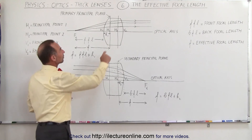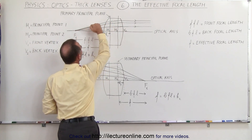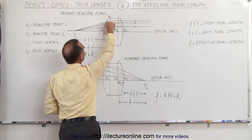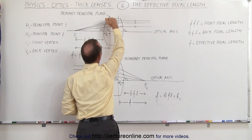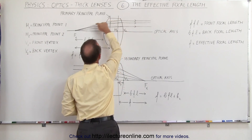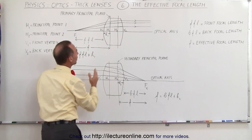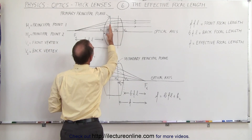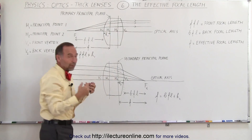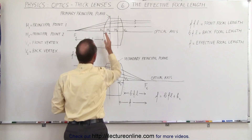Now notice the dashed lines inside. If we draw the line straight through across the boundary without changing direction until we get to the primary principal plane, and then draw the line horizontal, notice that this is how the ray can be assumed to be traveling through the lens. The point where they would bend would be the effective point — where they would bend at the primary focal plane.